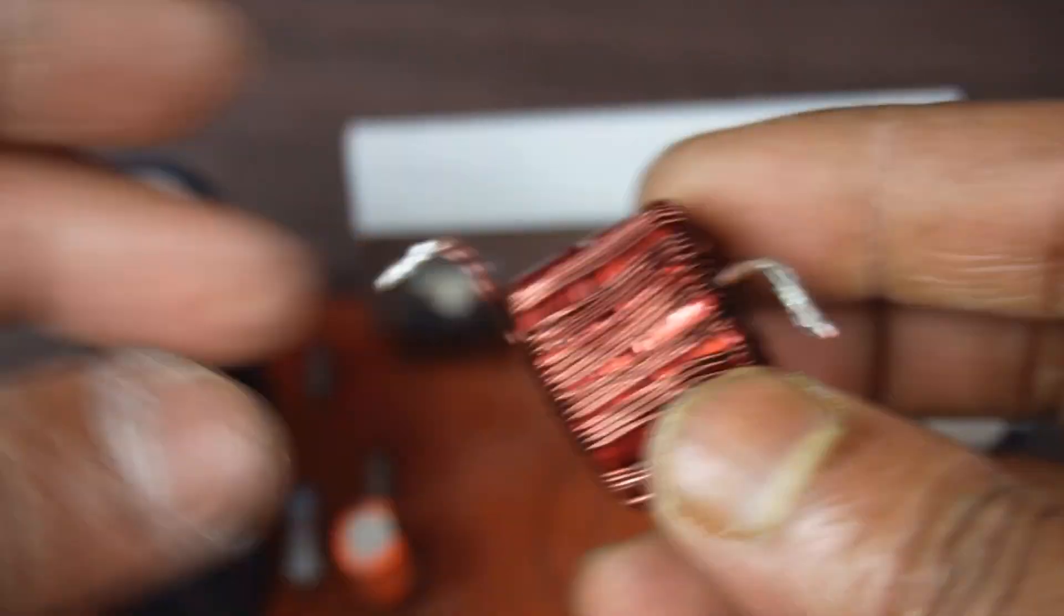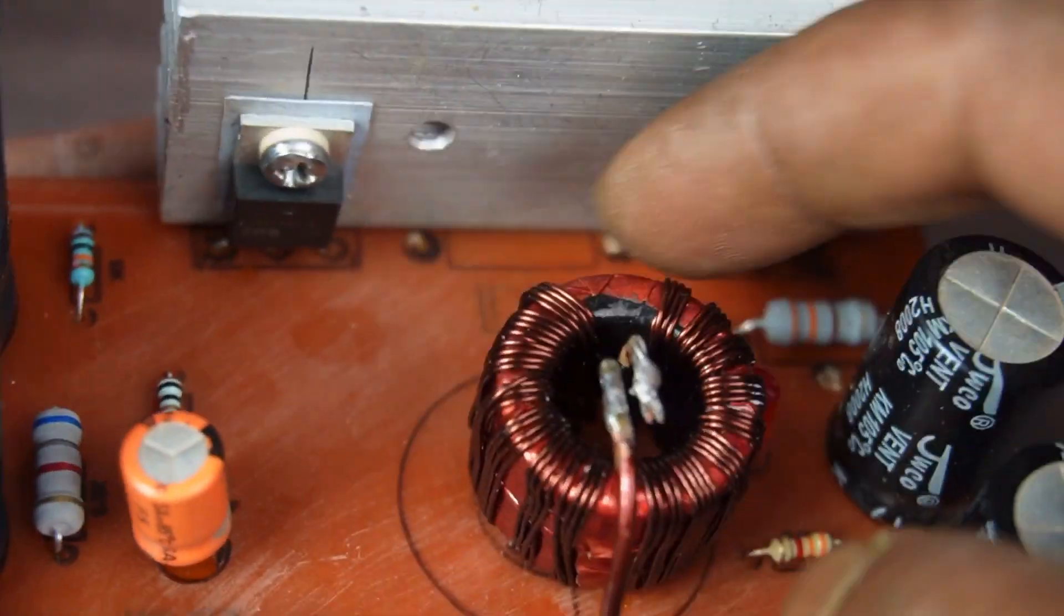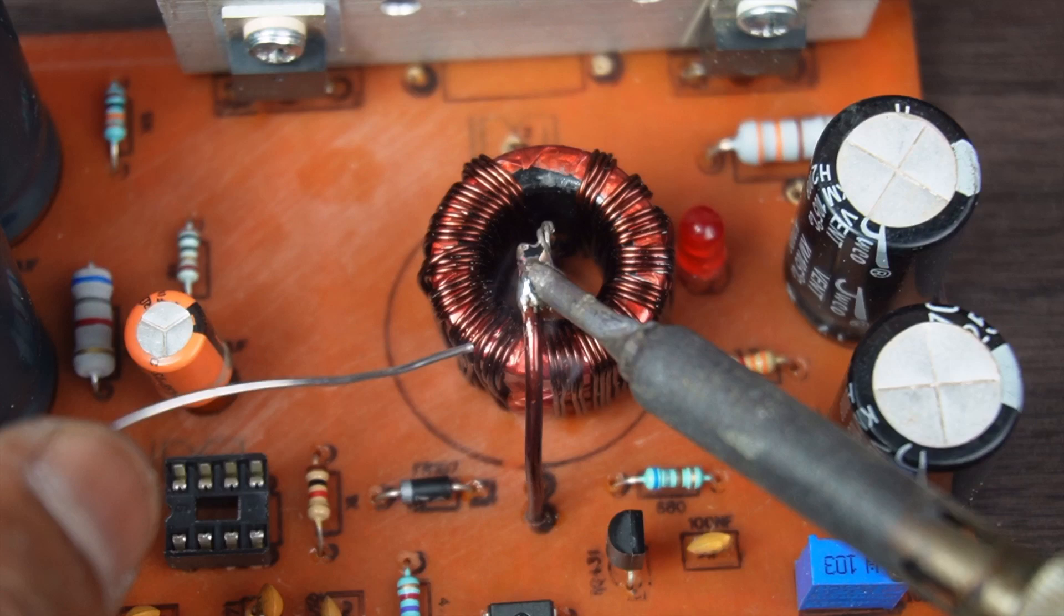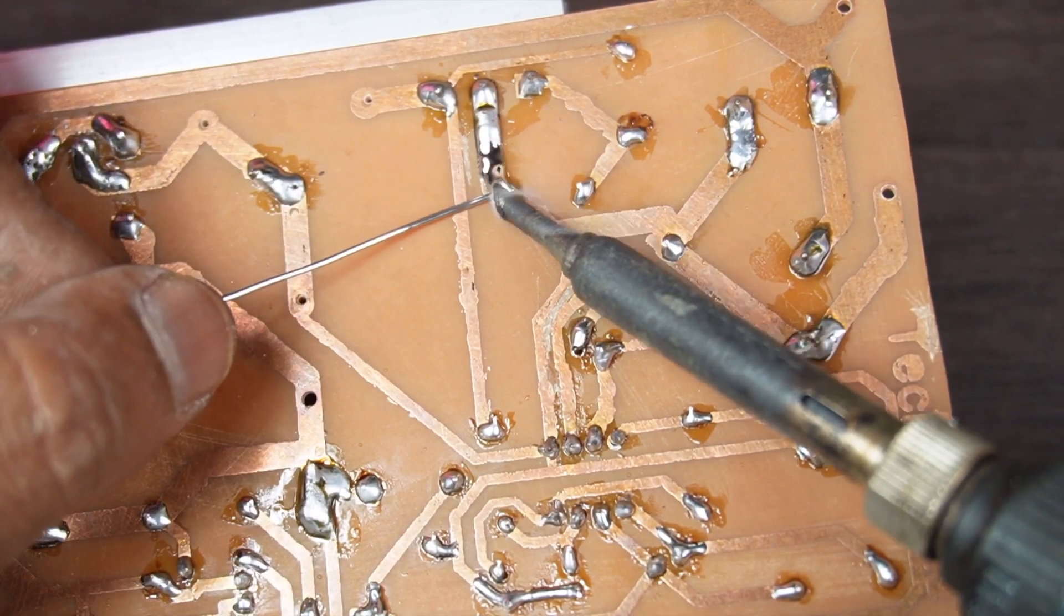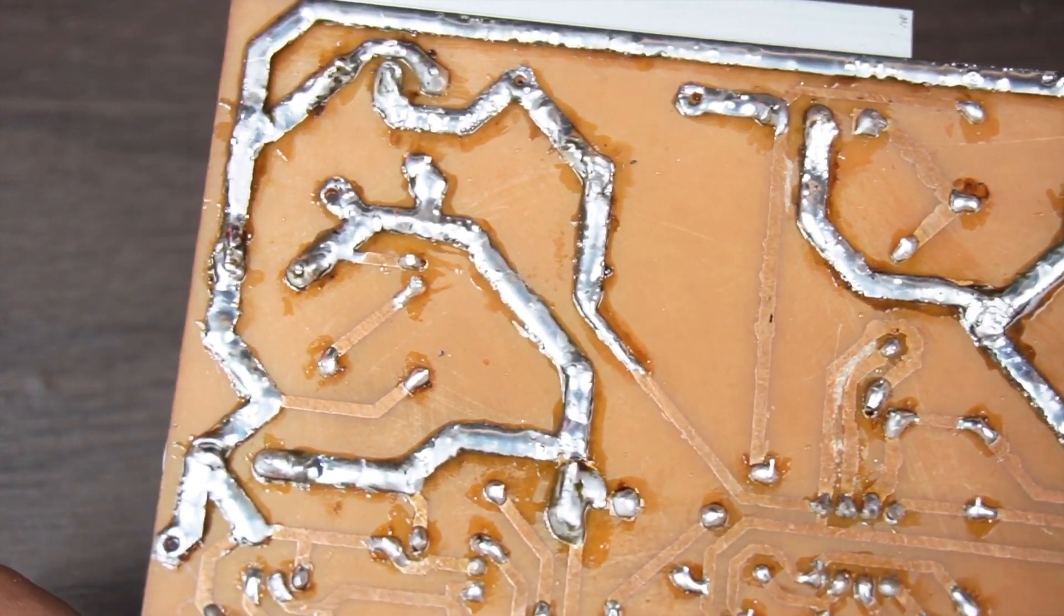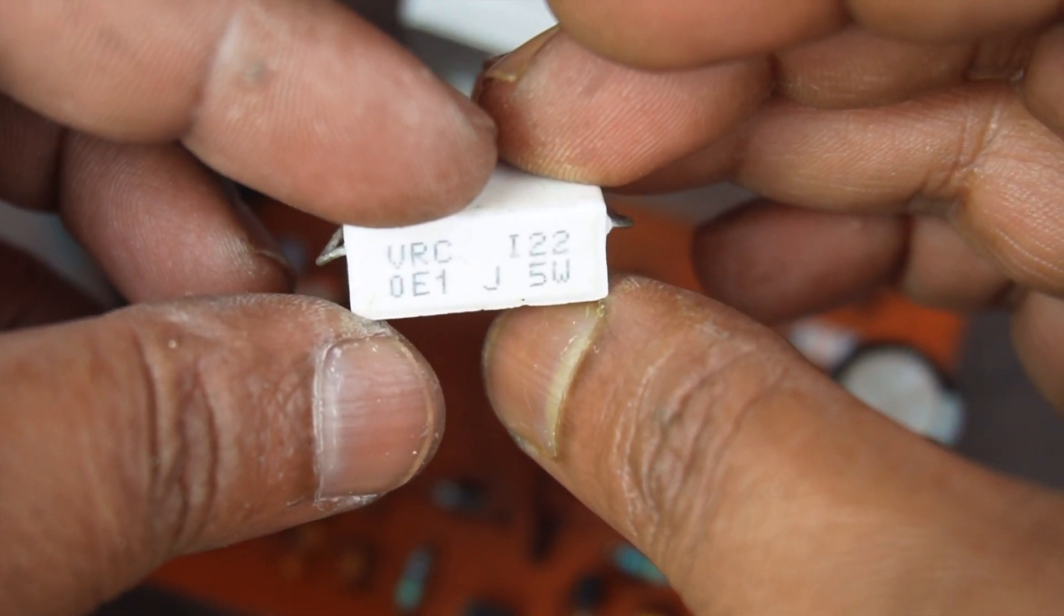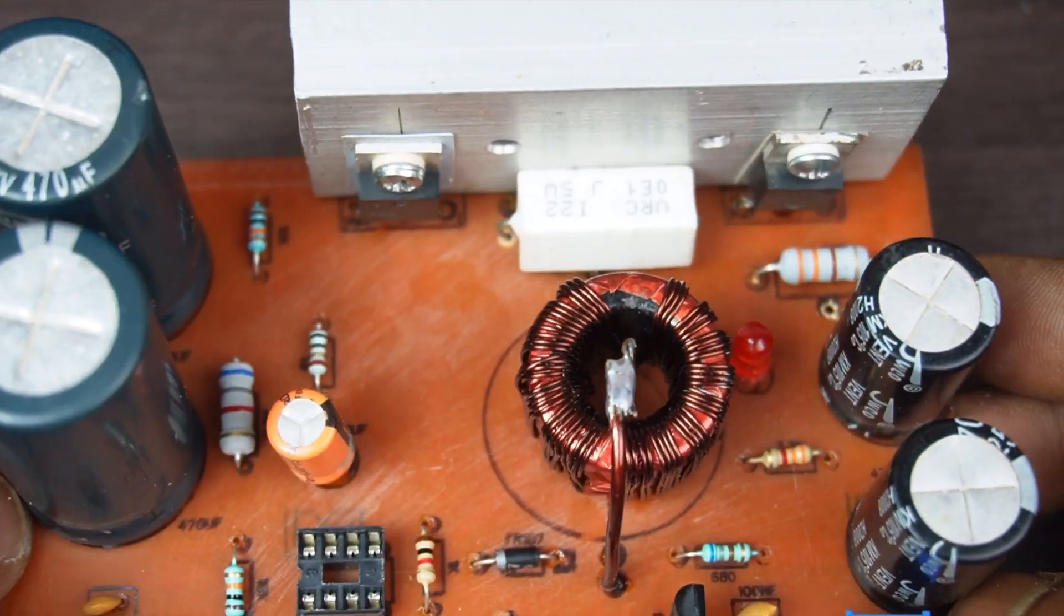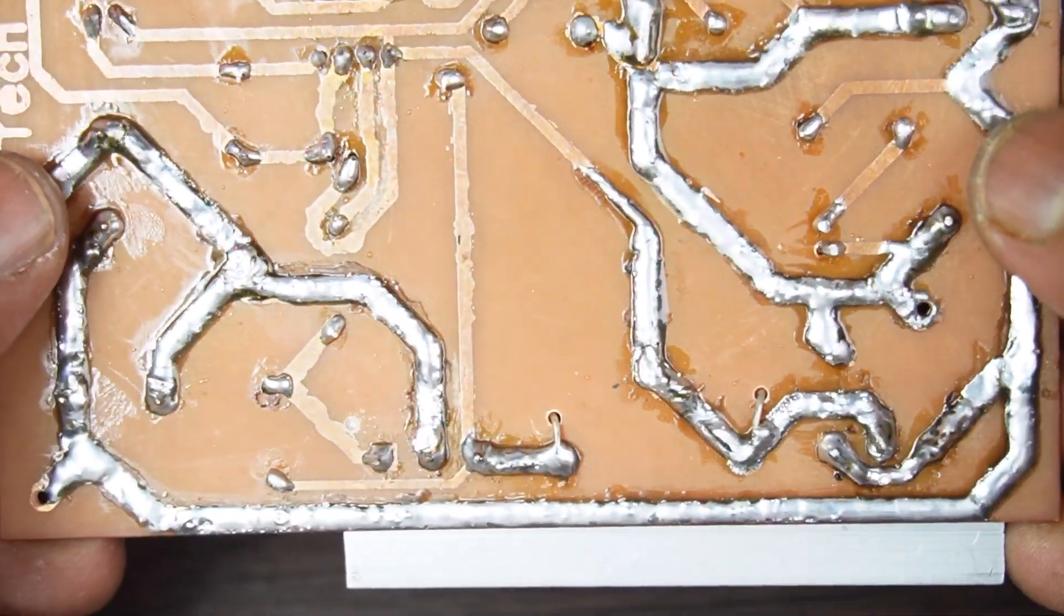Thickening the copper track where the main current will flow with solder wire, otherwise it will burn the copper track when high current will flow. Using 0.1 ohm 5 watt resistor to limit maximum input current. You can use a jumper wire if you don't need input current sensor. This will reduce pulse width when current reaches above threshold limit.